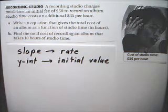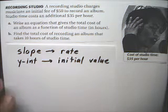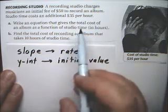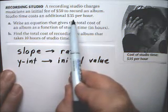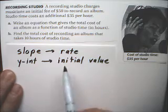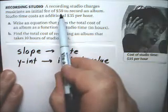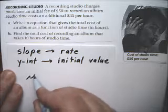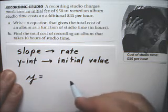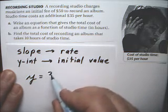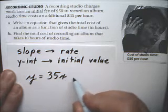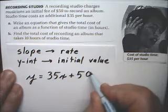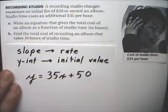So using this fact, it's pretty easy to write the equation because we know what the slope is. The slope is $35 per hour, and the initial value is $50. So using y's and x's, we would have y is equal to 35x plus 50.